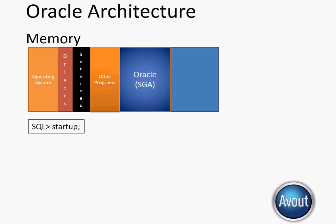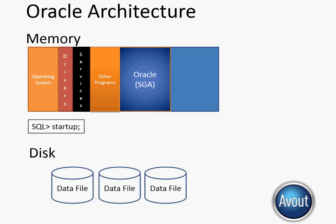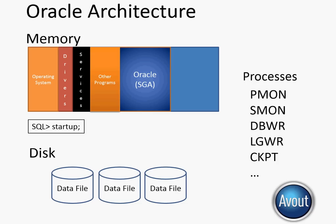When an Oracle DBA issues the startup command, one of the first things Oracle does is allocate all the pieces of memory that make up the SGA. Then Oracle goes out to disk and looks at the data files that make up this particular database instance. It does checks to make sure all the data files are in sync and there's no corruption. Then it starts up the background processes — there are a whole bunch of different ones, including PMON (the process monitor), SMON (the system monitor), and DBWriter (the database writer).